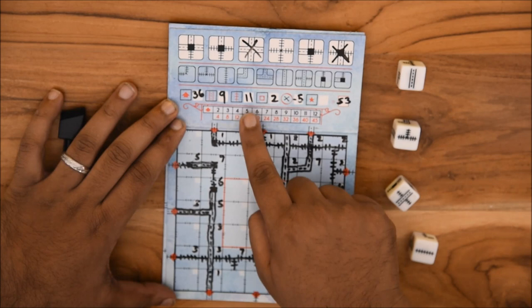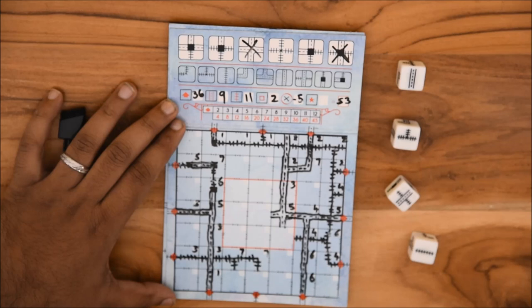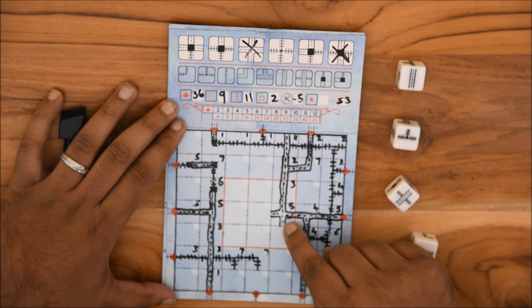You also receive one point for each space in the central 3x3 square that you have used. This square is marked by a red outline on the player sheet for easy reference. This score goes into the fourth box on the score guide.